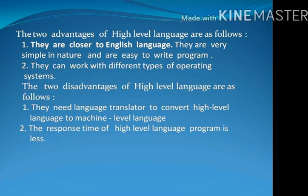The two advantages of high-level languages are as follows. Number 1: They are closer to English language; they are very simple in nature and easy to write programs. They can work with different types of operating systems. The two disadvantages of high-level languages are: Number 1: They need language translators to convert high-level language into machine-level language. Number 2: The response time of high-level language programs is less.